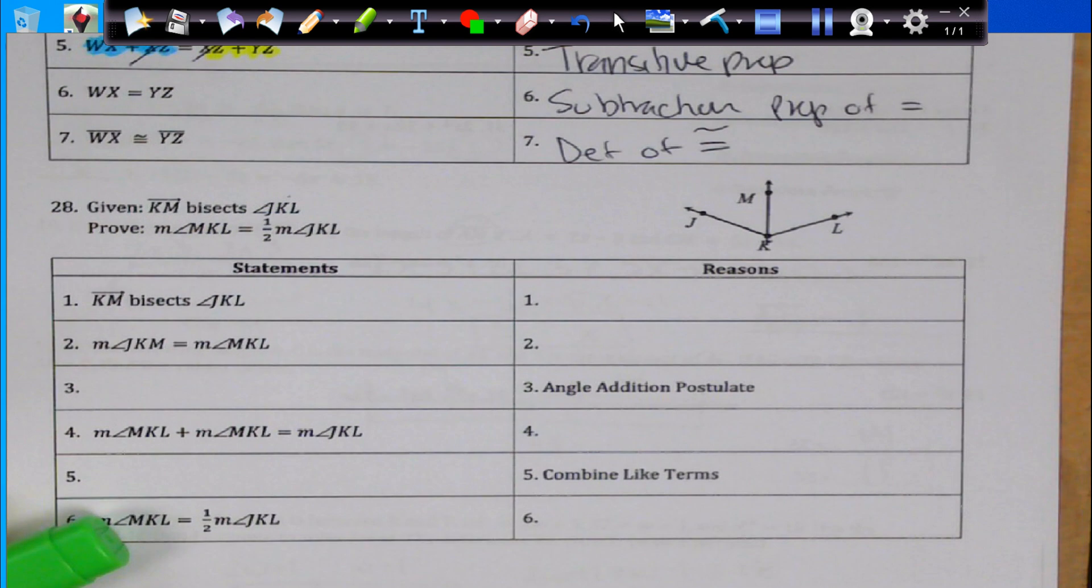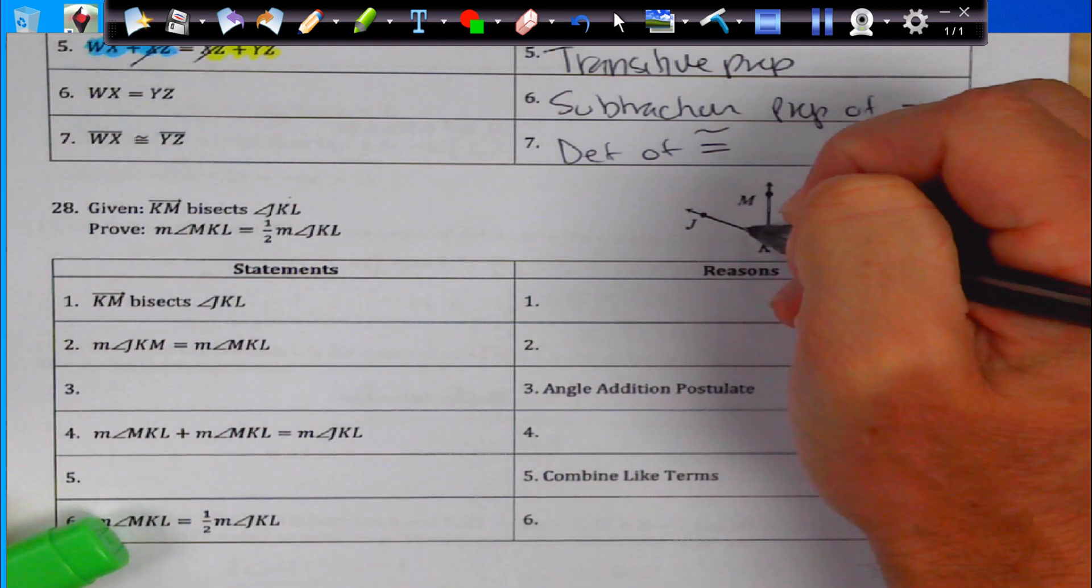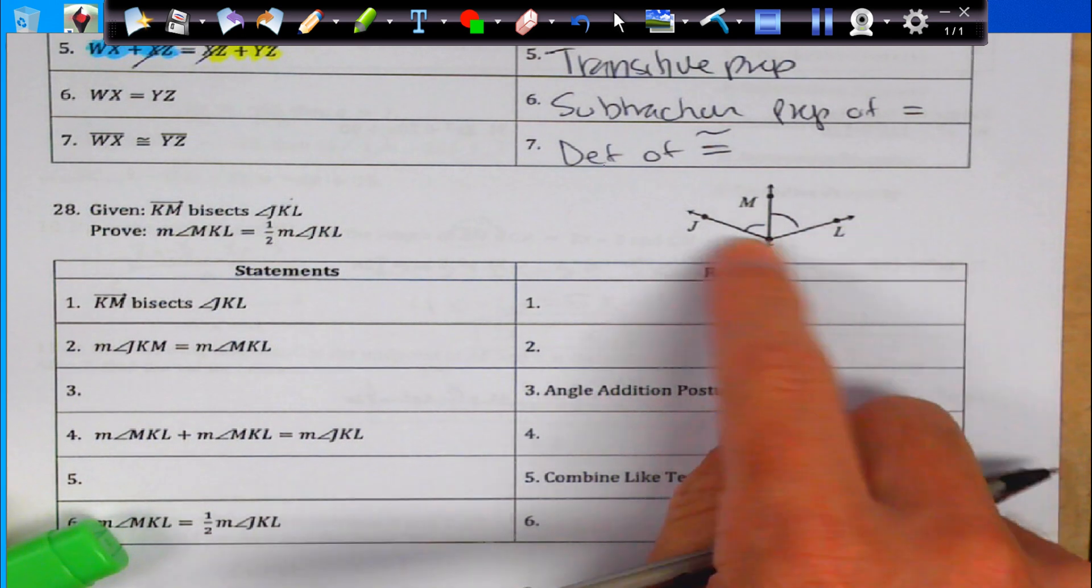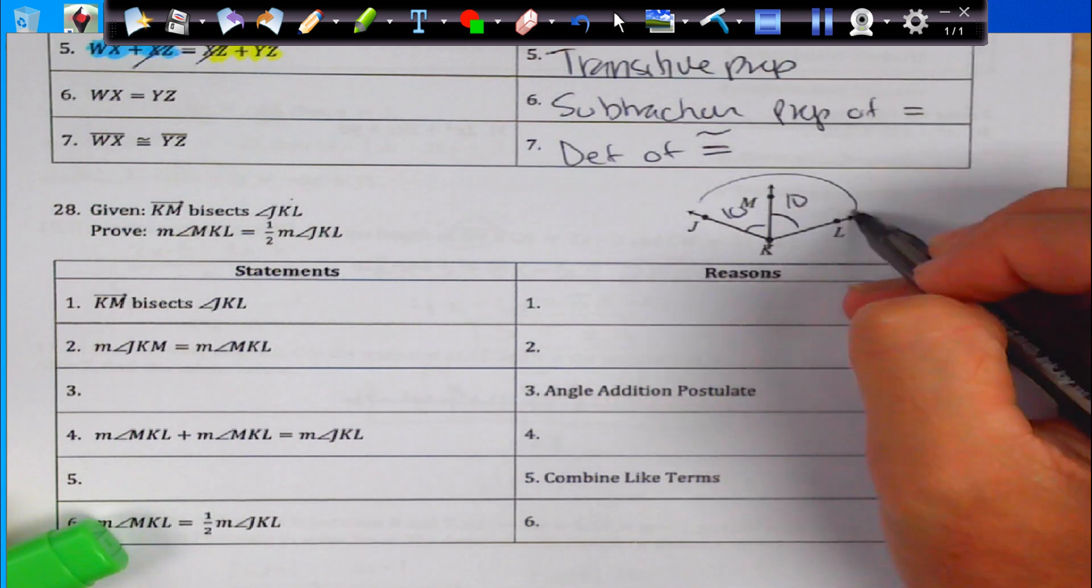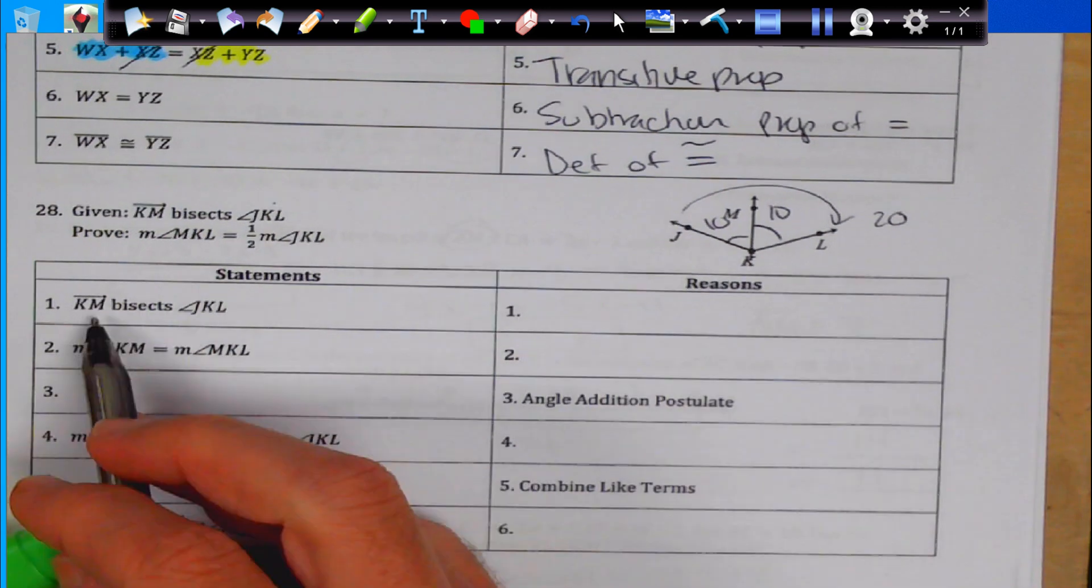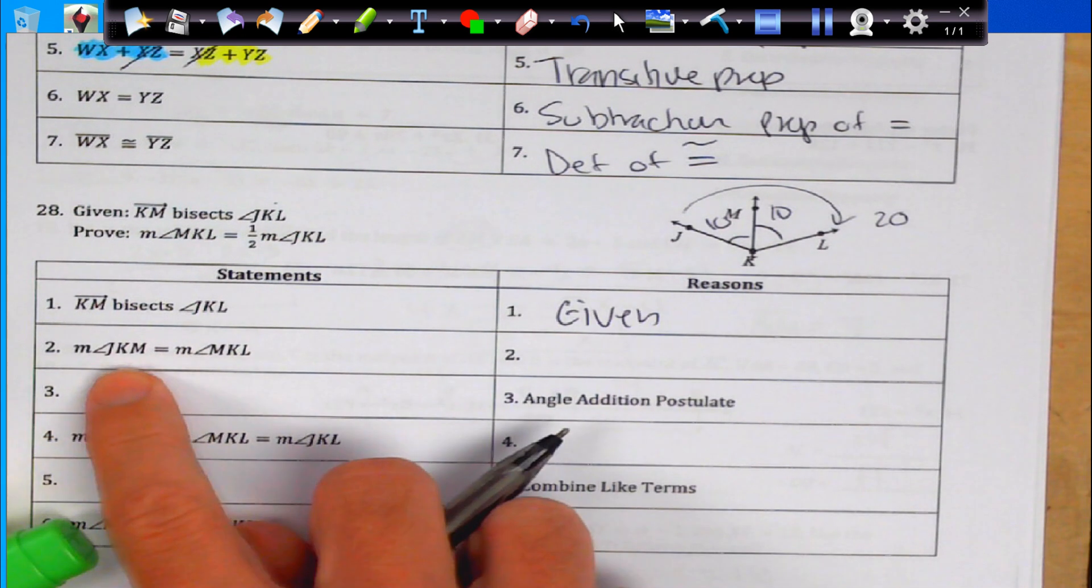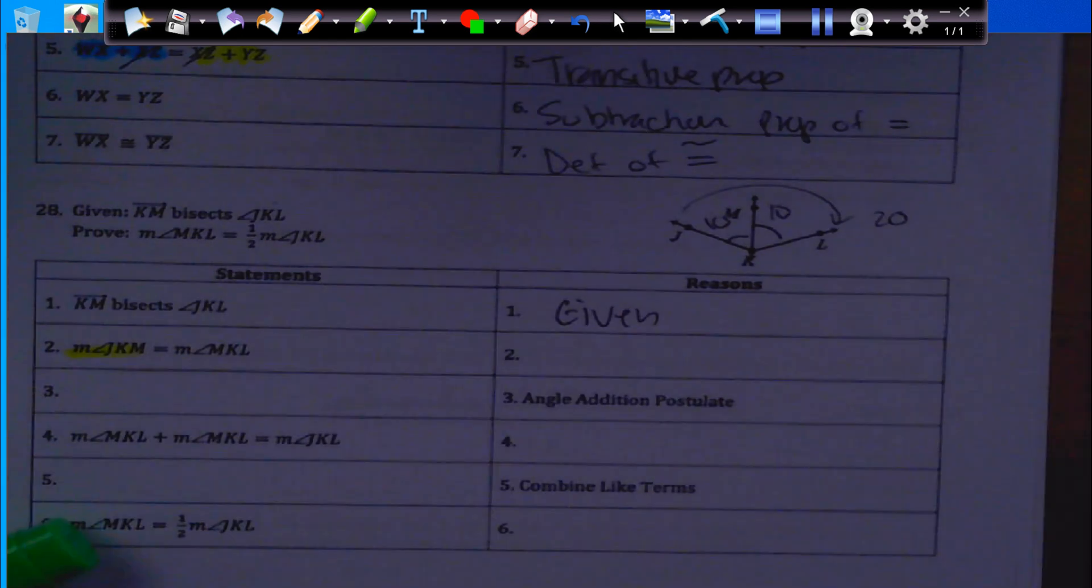Next one. KM bisects JKL. If KM is bisecting JKL, I already know that these two angles are congruent. And then it says MKL is half of JKL. Well, that kind of makes sense. Because if this was 10, that has to be 10, which means the whole thing is 20, and 10 is half of 20. So, if that makes sense to me, let's dive in. I'm probably going to use some maybe angle addition postulate. Let's go jump in. KM bisects JKL, that's given.